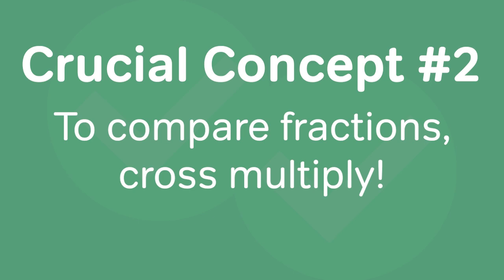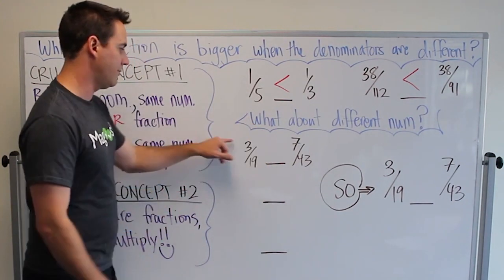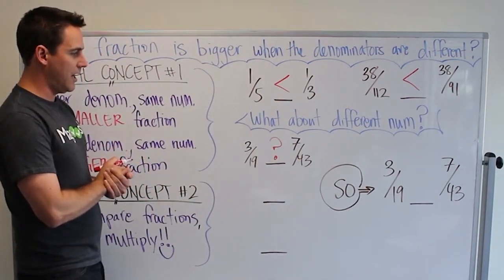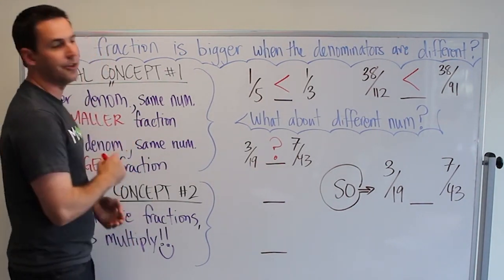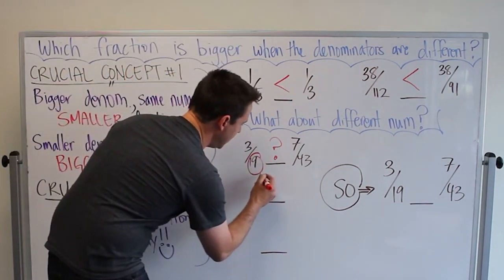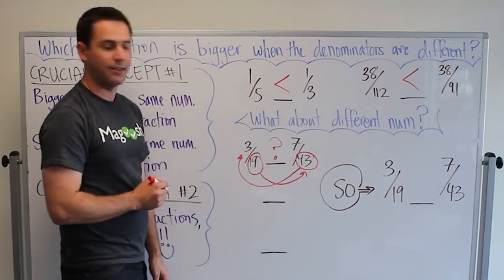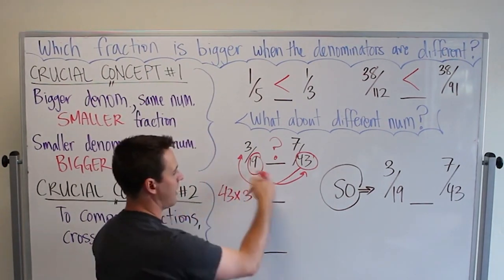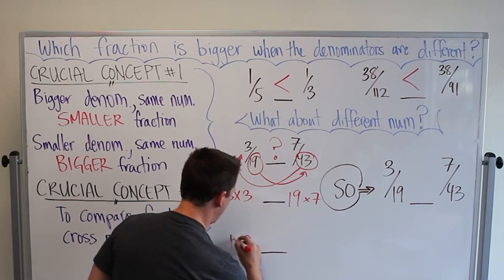There is one crucial step here. If we have two fractions and we can't tell which one is bigger — we have 3/19 and 7/43 — which one is going to be bigger? The key is to take the denominator and move it over to the other side when cross multiplying. So I'm going to take my 19 and move it over and multiply it by 7, and take 43, move it over, and multiply it by 3. That gives us 43 times 3 and 19 times 7. We do the multiplication: 43 times 3 is 129.